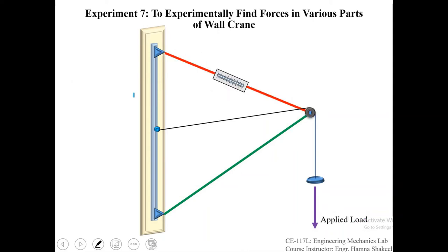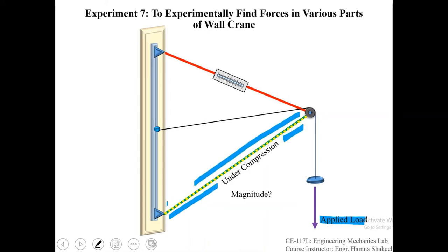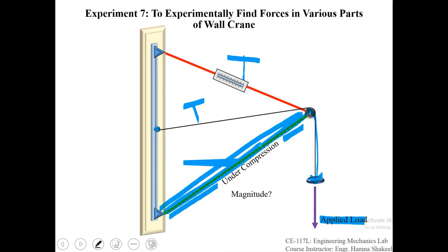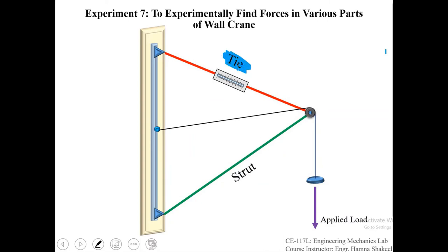If you observe the mechanism of this crane, you will see that if you apply a load, this member here will be under compression, while these two members will be under tension. There is no spring balance attached to the compressed member, so you don't know the magnitude of the compression force developed in it. The member under tension is known as a tie, and the member under compression is referred to as a strut. So you have one tie and one strut in your wall crane, and one string passed over the pulley attached to the hanger.